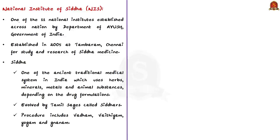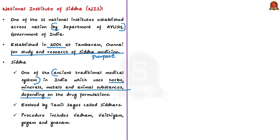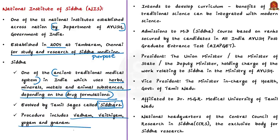The National Institute of Siddha is one of 11 national institutes established across the country by the Department of Ayush. It was established in 2005 at Tambaram, Chennai, in Tamil Nadu. Its purpose is for the study and research of Siddha medicine. The Siddha system is one of the ancient traditional medical systems in India; it uses herbs, minerals, metals, and animal substances depending on the drug formulations. The system was evolved by Tamil sages called Siddhas, and the procedure includes Vatham, Vaithiyam, Yogam, and Jnanam.